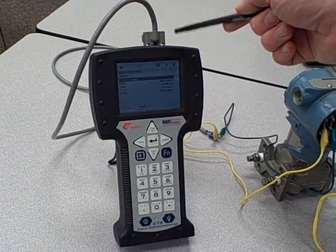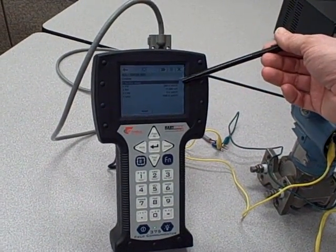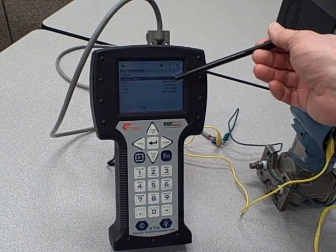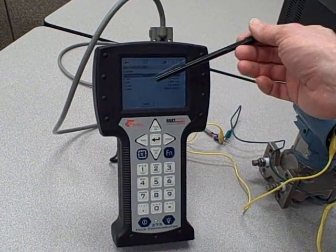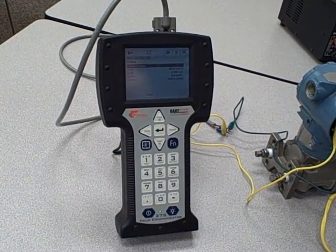We have it configured for HART operation right now, and you can see on the screen we're looking at the current process variable of 500 inches of water, the analog output of 12 milliamps, lower range of 0 inches of water, and upper range of 1,000 inches of water.